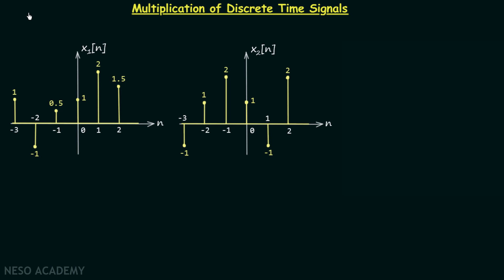In the last lecture we performed the addition of two discrete time signals, and now in this lecture we will perform the multiplication of two discrete time signals.